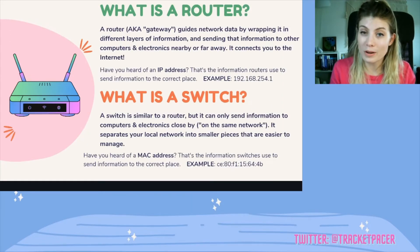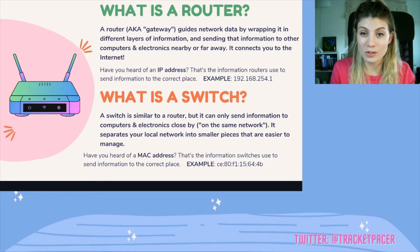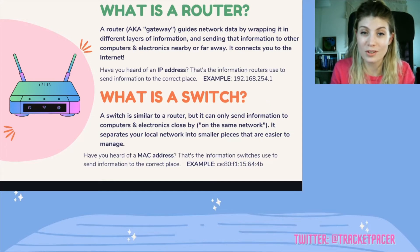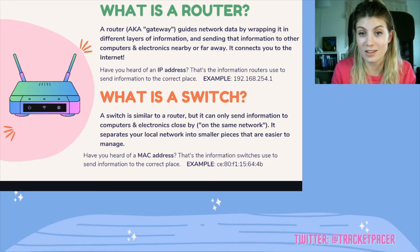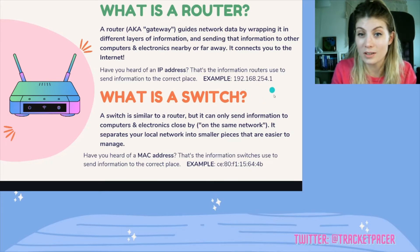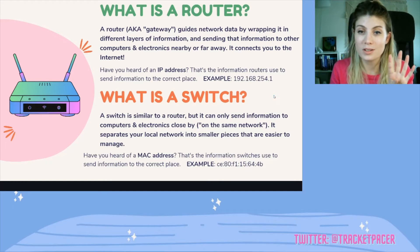So what is a router? We call a router the gateway of the network because it guides packets and network data throughout your home network, and it can also send that data outside of the network. A router guides your network data by wrapping it in different layers of information and sends that to other computers and electronics, either nearby at home or far away over the internet — it connects you to the internet, essentially. If you've ever heard of an IP address, that's the information routers use to send information to the correct place. For example: 192.168.254.1 — an IP address is four sections of numbers connected by dots.